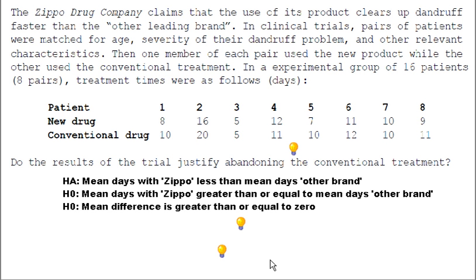The null hypothesis then is the reverse of that. Mean days with Zippo should be greater than or equal to mean days of the other brand.